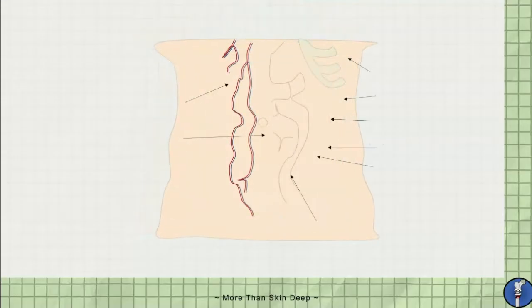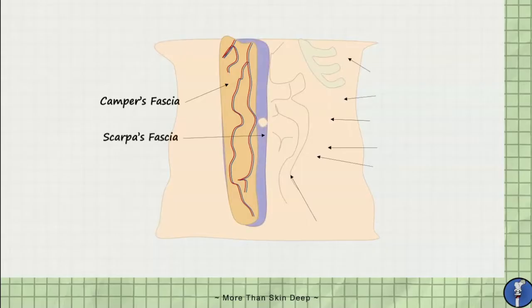Let's get into the anatomy that you will incise during a cesarean section. The first layer of the anterior abdominal wall, deep to the skin, is Camper's fascia, a fatty fascia layer. Underneath the Camper's fascia is Scarpa's fascia, which is a membranous fascia layer.